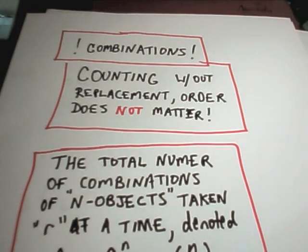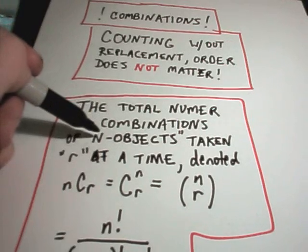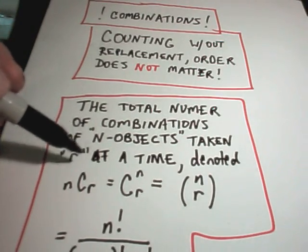So this is one thing that you have to think about and definitely be aware of. It says the total number of combinations, if we have n objects to select from, taken r at a time.